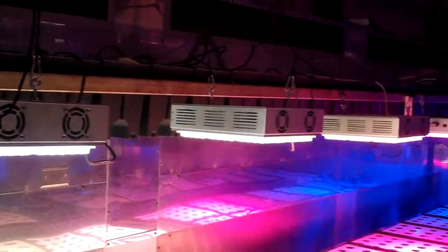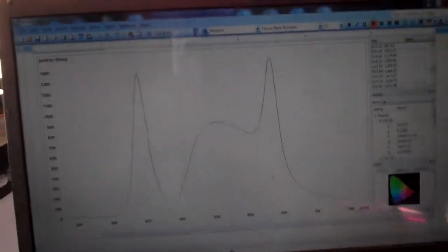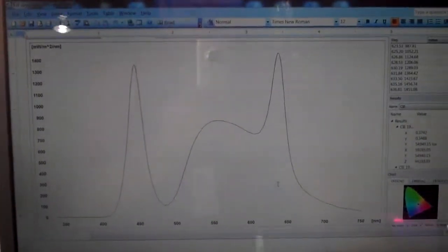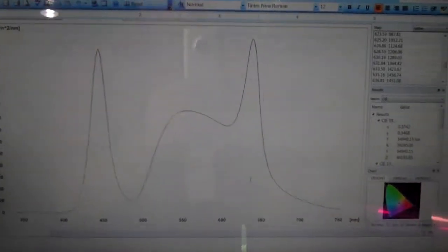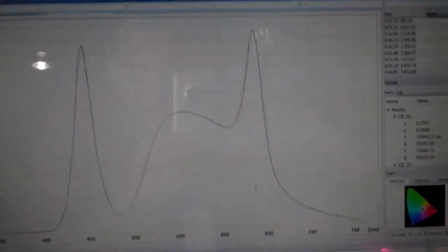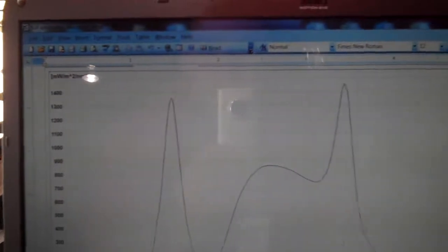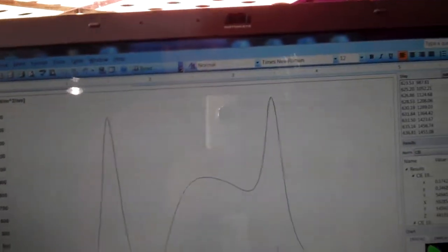Today we're at NASA Ames Research Center in Mountain View and we are testing the Apache Tech lights. You can see our latest color spectrum that we've designed has blue, white, and red. You can see the blue peak is about 450 nanometers at 1400 milliwatts per square meter.